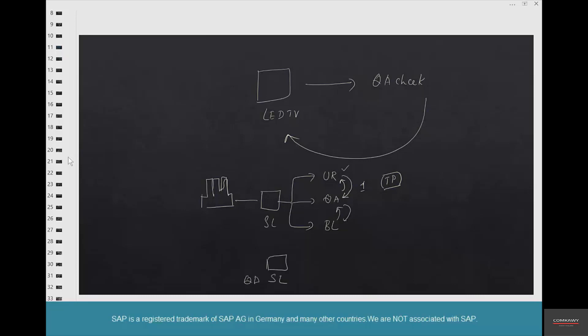Or you can create a separate storage location, call it QA storage location, and from here you could put it here. That's another way to do non-destructive sampling. Which way to do depends on the business scenario.